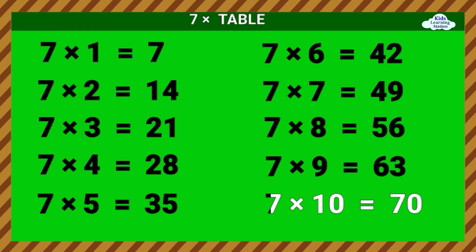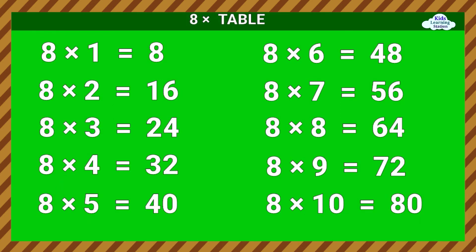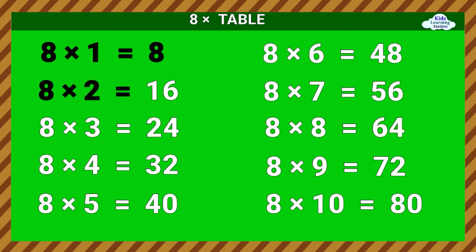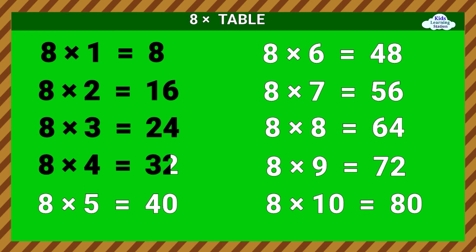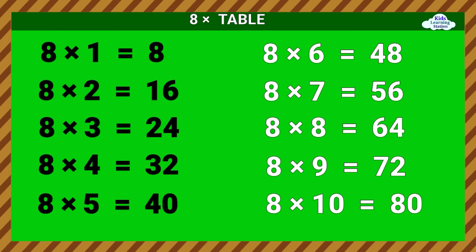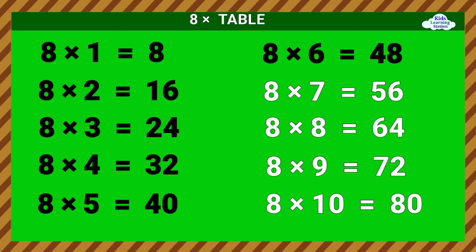7 times 10 equals 70. Eight times table. 8 times 1 equals 8. 8 times 2 equals 16. 8 times 3 equals 24. 8 times 4 equals 32. 8 times 5 equals 40. 8 times 6 equals 48. 8 times 7 equals 56.